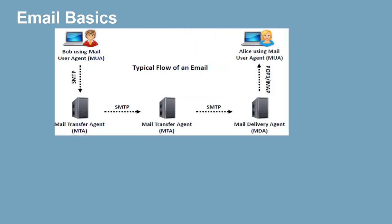This is how an email flow happens. Bob uses a Mail User Agent (MUA) and connects his machine using SMTP to a server running a Mail Transfer Agent (MTA). Whenever you are sending and receiving, SMTP is involved. That MTA further sends it to a bigger server, which forwards it to the receiving server for that domain. There you have a Mail Delivery Agent (MDA). The recipient — say Alice — uses a Mail User Agent again to pull her emails through POP3 or IMAP.